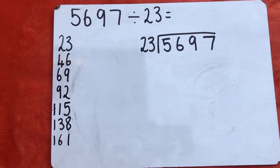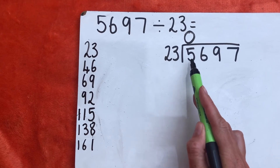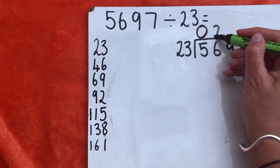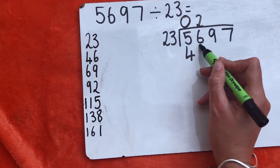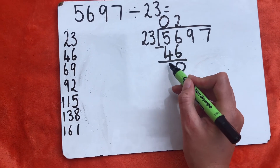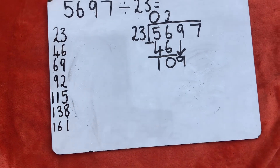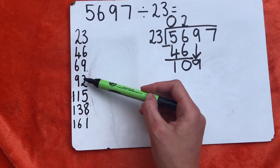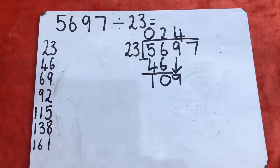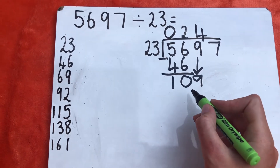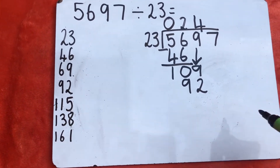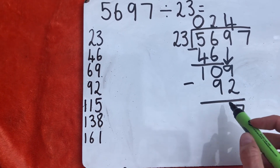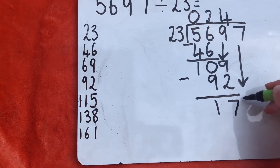So the first thing: how many 23s are in 5? Zero. How many 23s in 56? There are 2 — I can't go further because that would take me over 56. So 2 times 23 is 46. I do my subtraction and bring my number down to get 109. It's so helpful having my times tables written down. How many 23s in 109? There are 4 whole groups, making 92. I do my subtraction: 9 take away 2 is 7, and 100 take away 90 gives me 17. I then bring down my 7 to get 177.